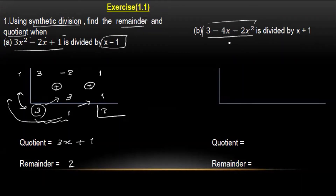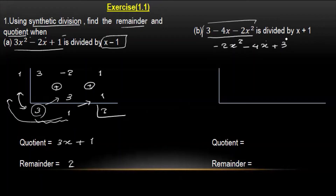Let's say we're going to do minus 2x squared, that's a line on top, minus 4x plus 3. If you want to set up the synthetic division, you will have minus 2, minus 4, and 3.